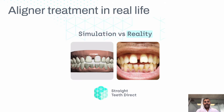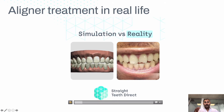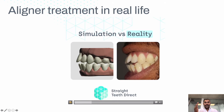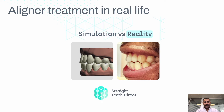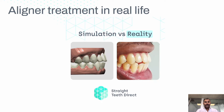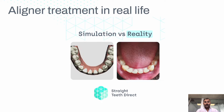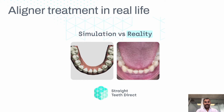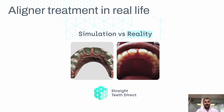Looking at some examples of simulation versus reality, we can start to see by real images how the teeth can step by step close into position. It means that gaps can close, spaces can be utilized, and the smile improves. It's all step by step from 3D models.